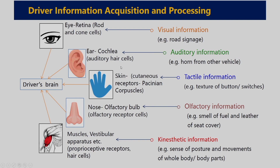Drivers receive information through various sensory channels — sense organs like the eye, ear, skin, nose, various muscles, and proprioceptive receptors. They receive visual information, for example road signages; auditory information from horns of other vehicles; tactile information such as the texture of button switches; and olfactory information like the smell of fuel or leather from the seat cover.